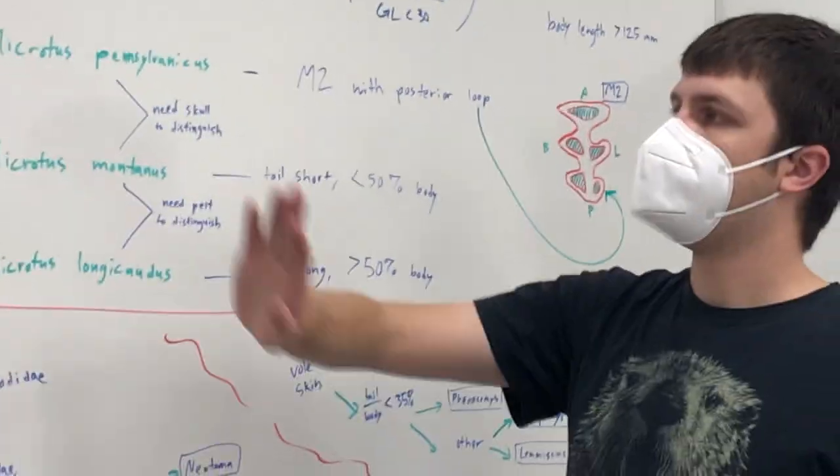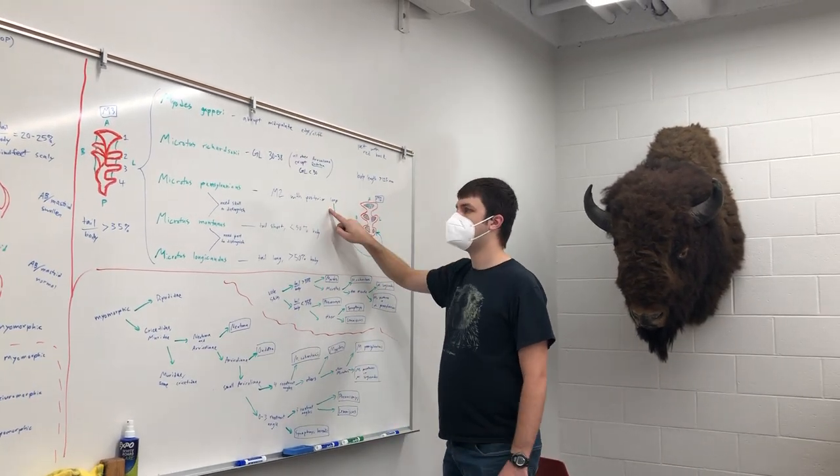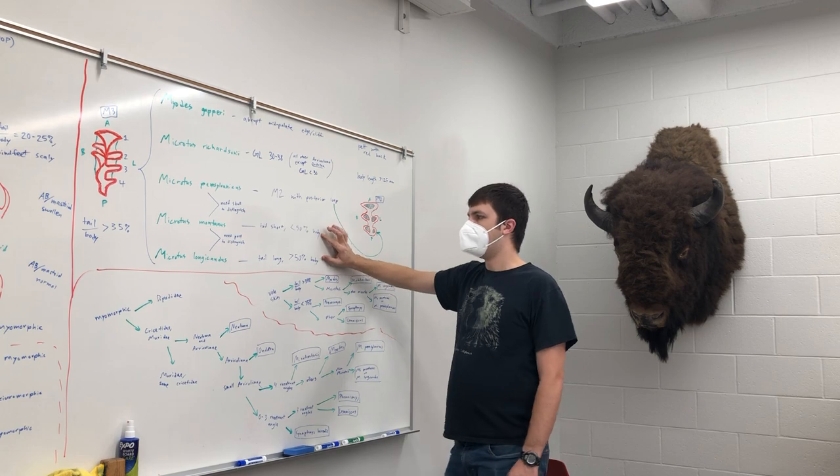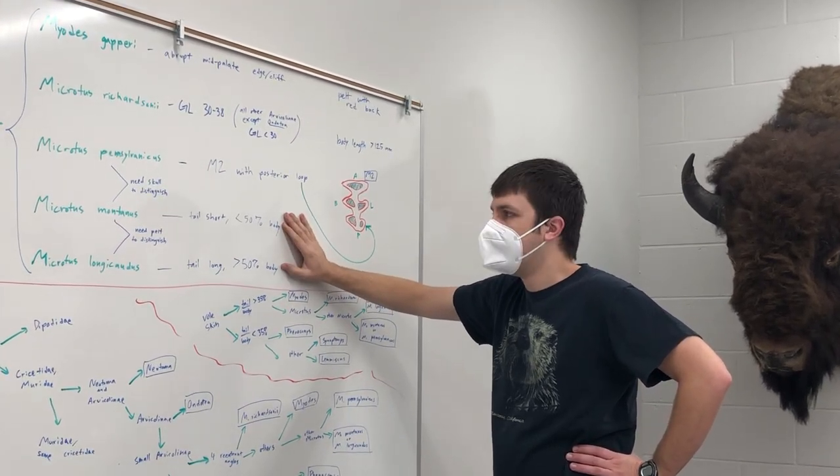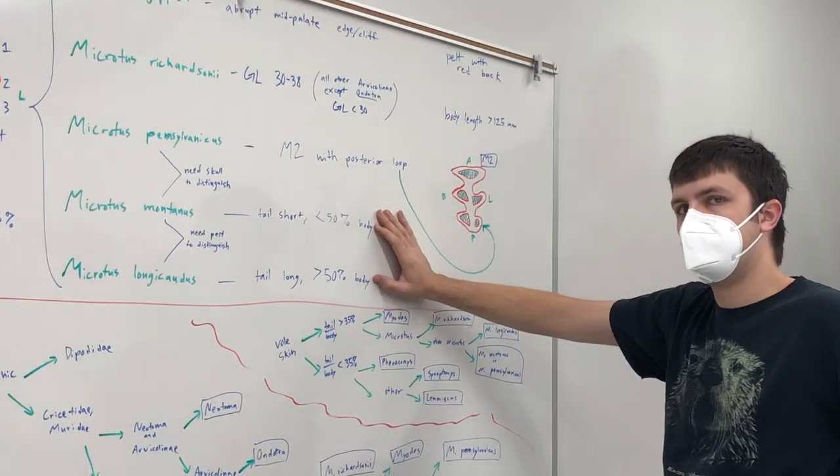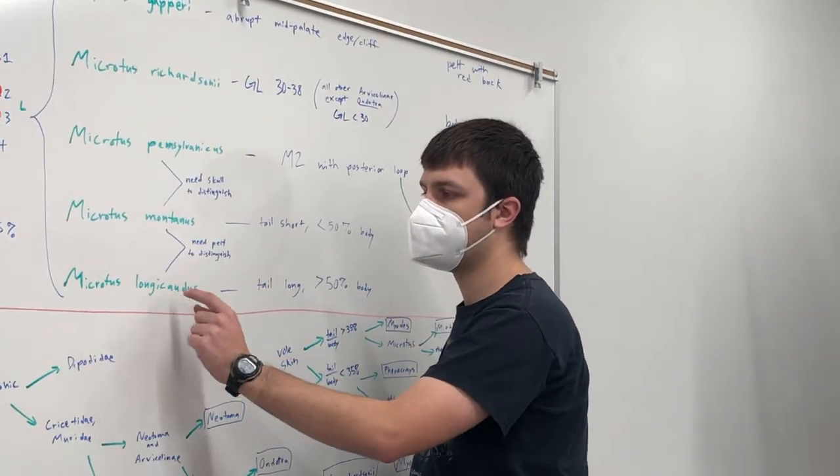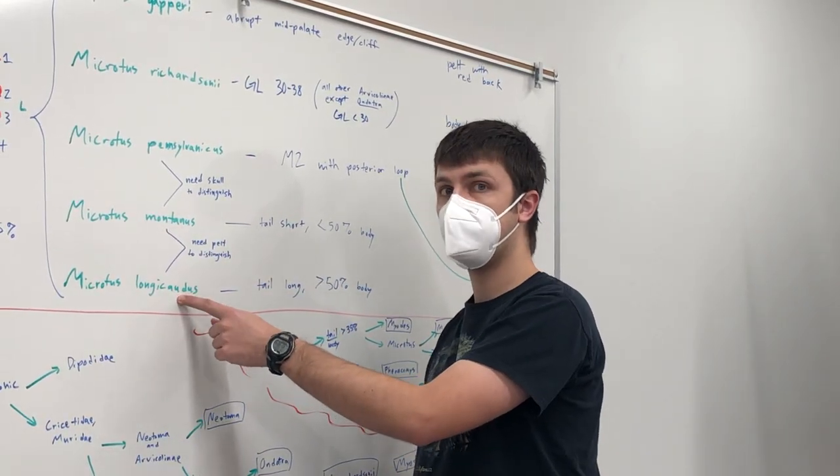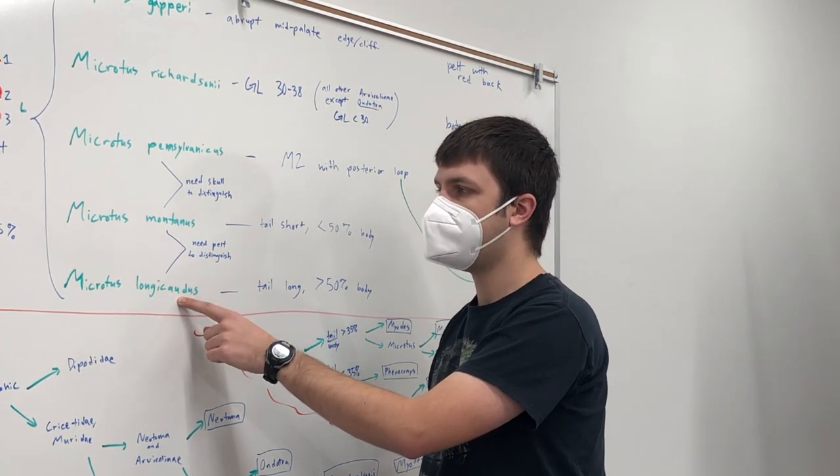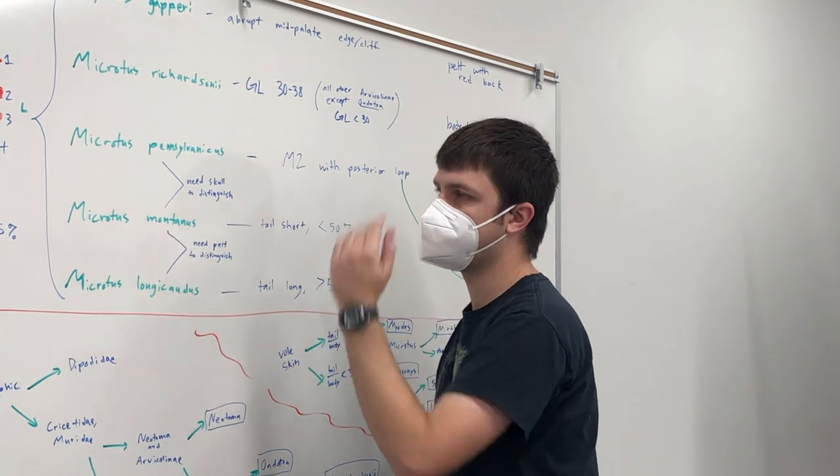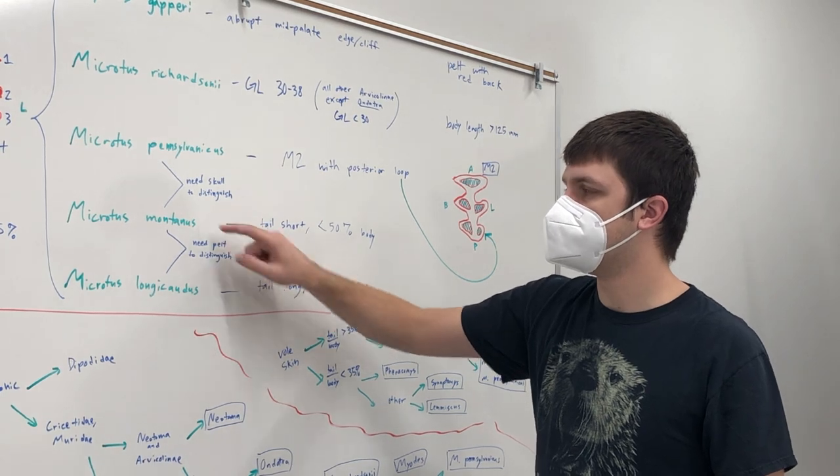Let's say it has four re-entering angles, too small to be richardsoni, doesn't have this cliff, doesn't have the loop. Well, then we're kind of stuck at these two. These skulls are indistinguishable as far as we're concerned. So if you want to know if it's Microtus montanus or Microtus longicaudus, you would need to have the pelt also, which we may give you. If you don't have the pelt, you would know it's just Microtus sp, some species. But if you have the pelt and the skull, then you can figure out which of these it is.